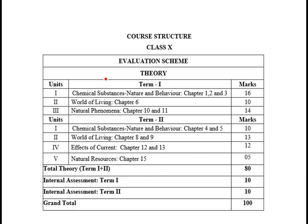In term first, the first unit is chemical substances nature and behavior — chapters 1, 2, and 3, all belonging to chemistry — with a total of 16 marks. The second unit is world of living, chapter 6, with a total weight of 10 marks. The third unit covers chapters 10 and 11 with a total weight of 14 marks.